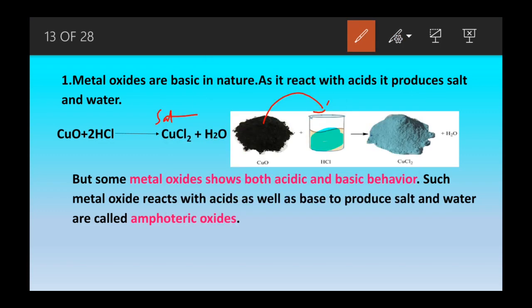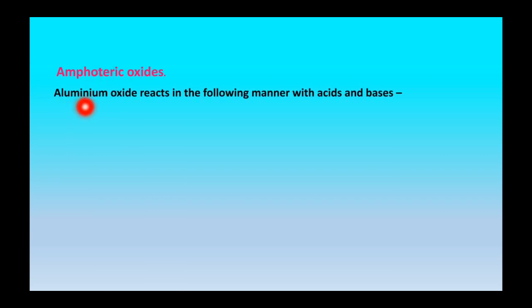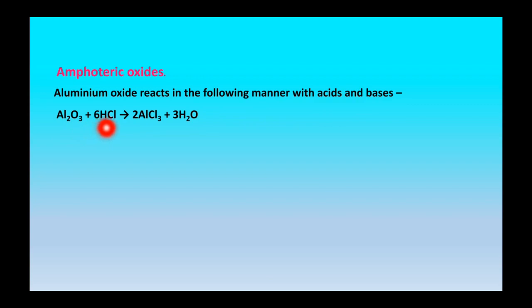When metal oxides react with acid they produce salt and water. However, some metal oxides show both acidic and basic behaviour. Such metal oxides that react with both acid and base to produce salt and water are called amphoteric oxides. An example of an amphoteric oxide is Al₂O₃. When Al₂O₃ reacts with acid it produces AlCl₃ plus H₂O.